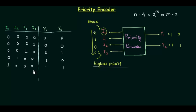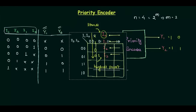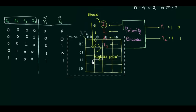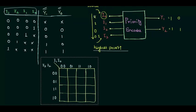This is the complete truth table for the priority encoder, and I hope you now understand the central idea. The next step is to find the logical expressions for y1 and y0. Since there are four inputs, we will use a 16-cell K-map, and two such K-maps are required because we have two functions. I have already made a 16-cell K-map, so the only thing we need to do is fill it.